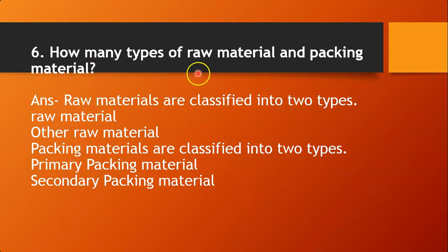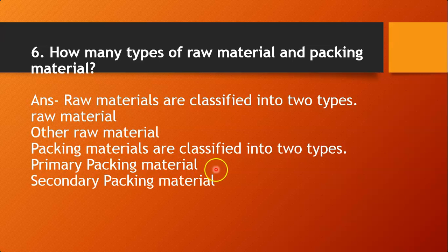The next question is: how many types of raw material and packaging material are there? In industry, raw materials are used for the production of the desired product. Raw materials are of two types: simply raw material and other raw material. Packaging materials are classified into two types: primary packaging material and secondary packaging material.